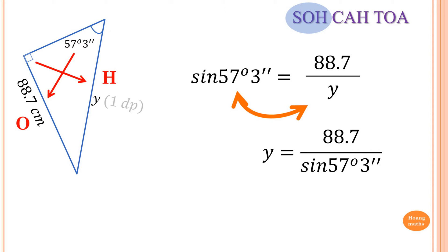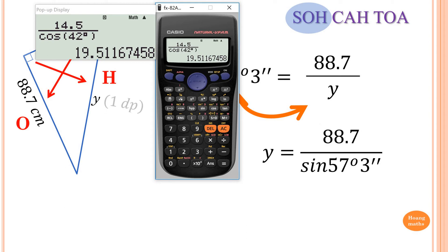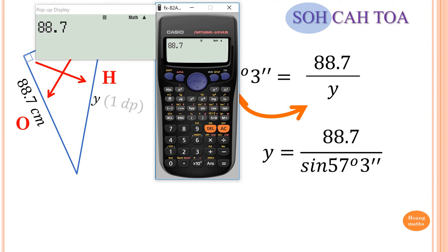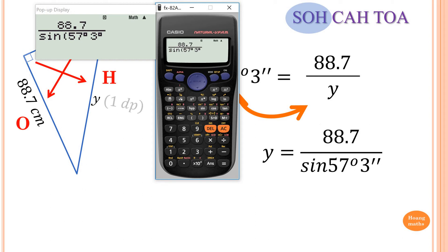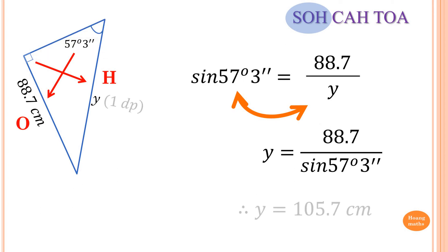Then just type that in the calculator exactly the same: 88.7 divided by sine of 57 degrees and 3 minutes, close the bracket, then press equals. I get 105.7 — because it's one decimal place, and the digit after is less than 5, the answer is 105.7 centimeters.